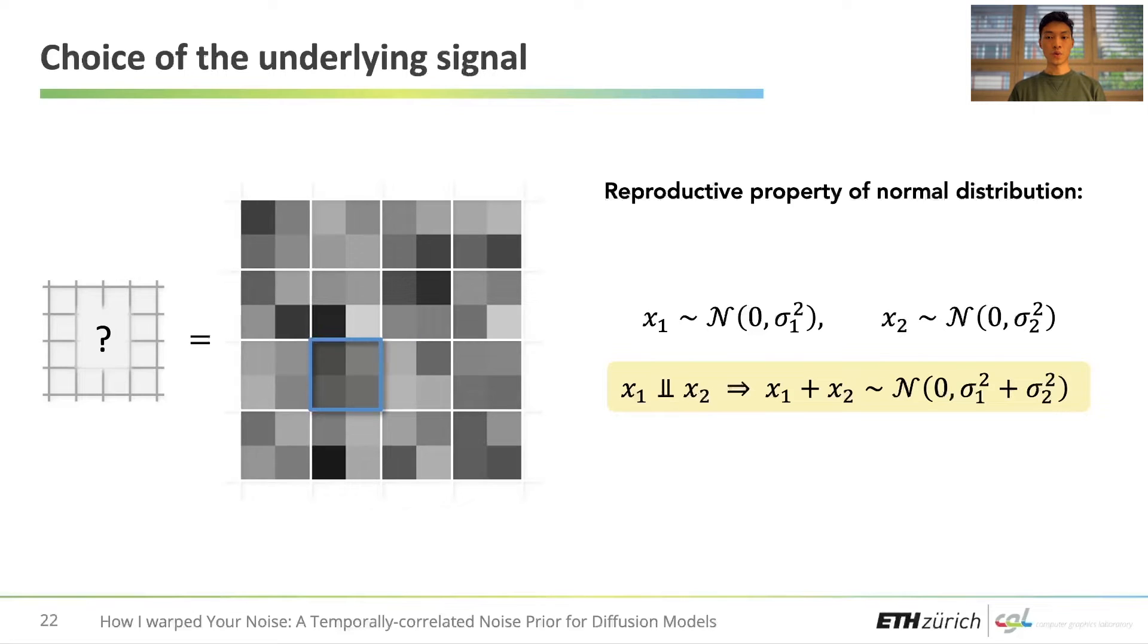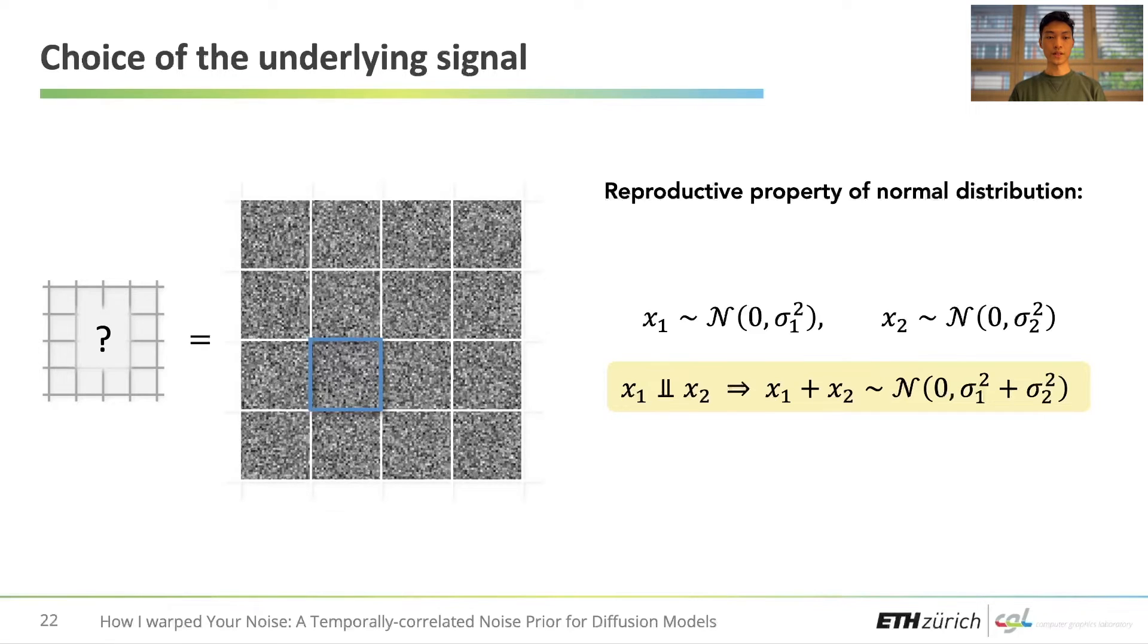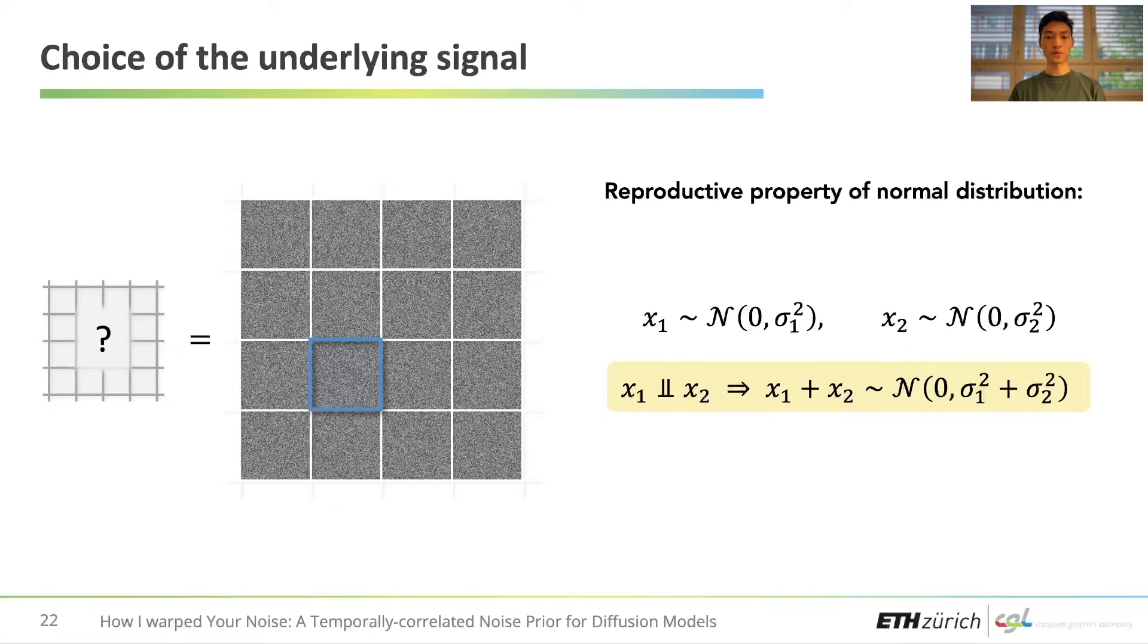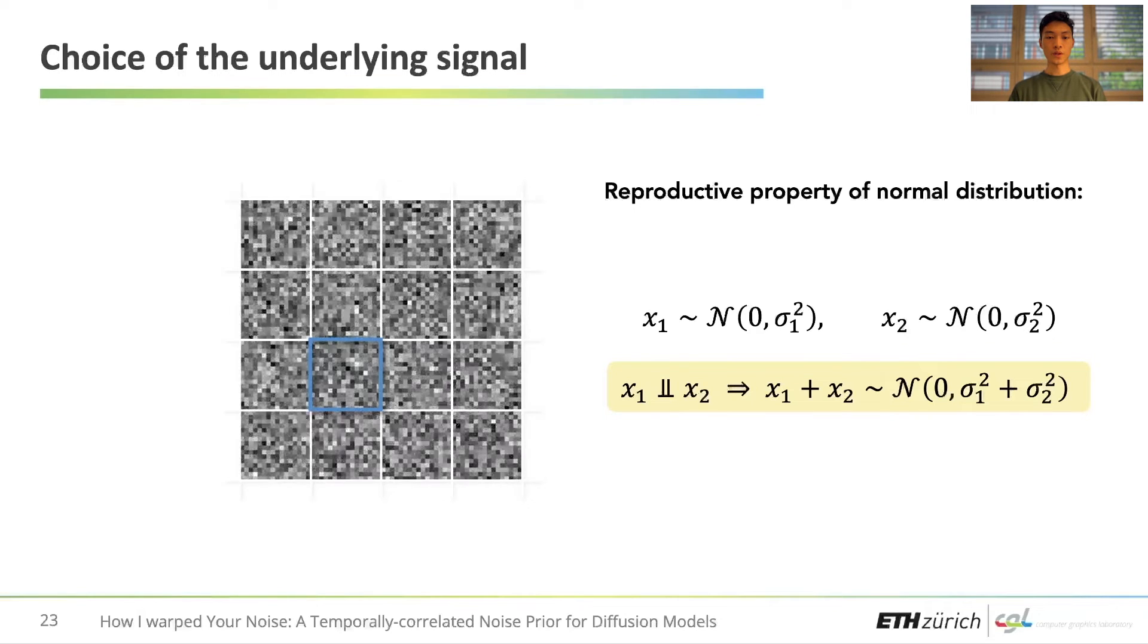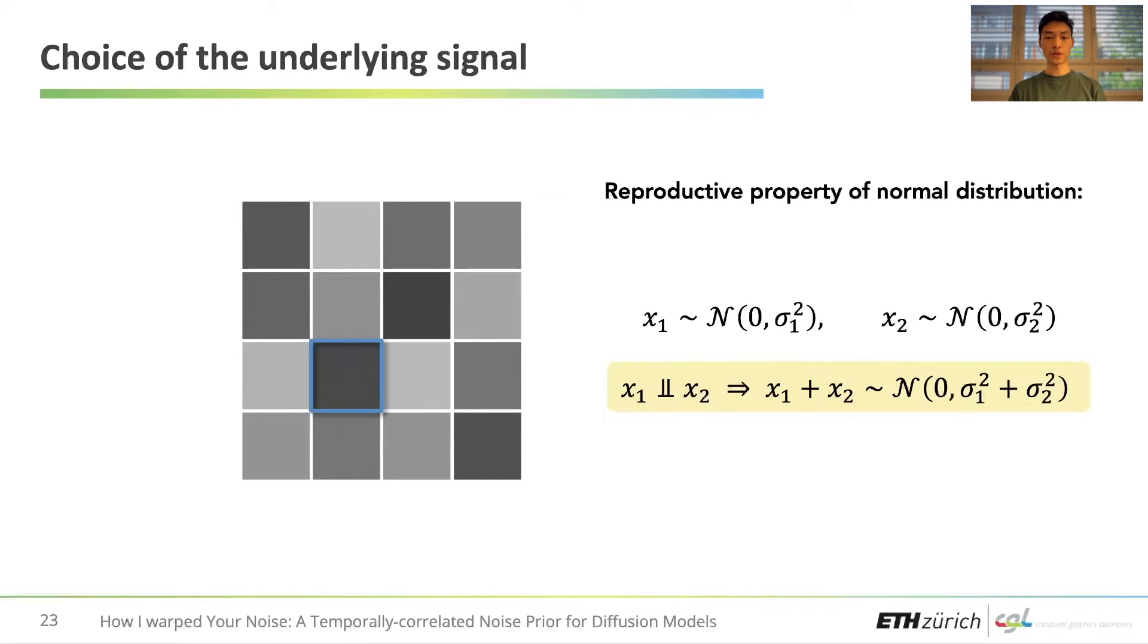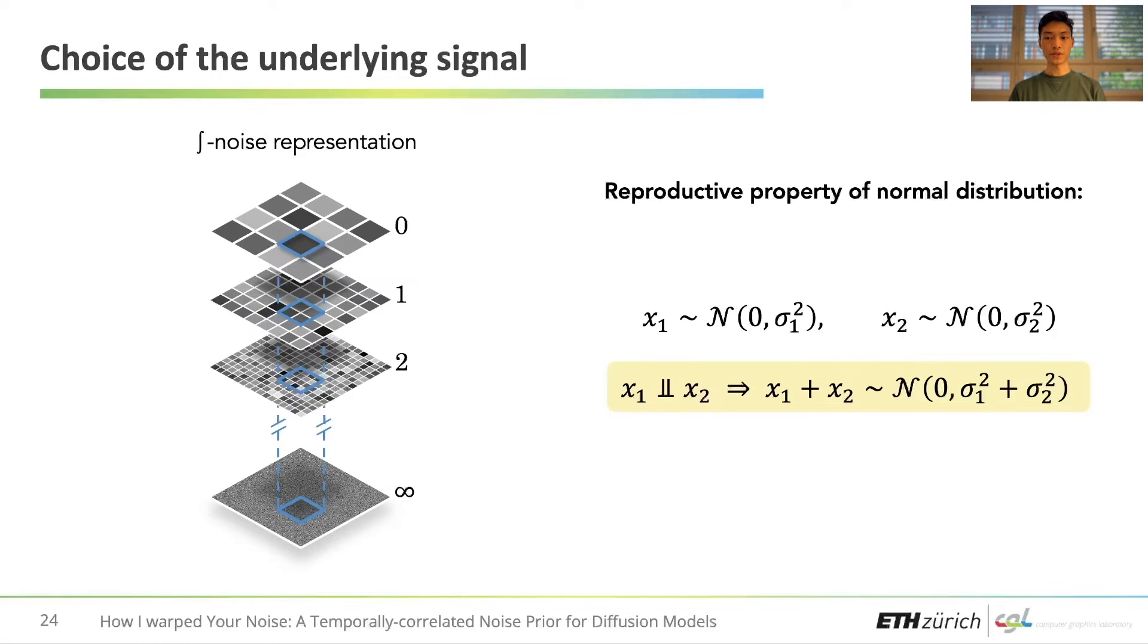Conceptually, one can build this by recursively subdividing pixels into four smaller samples. At the limit, the underlying signal becomes a continuously-defined white noise field. We call this new way of thinking about a discrete noise sample the integral noise representation, and propose in our paper a simple way to generate higher resolution samples that are consistent with a given discrete initial noise.